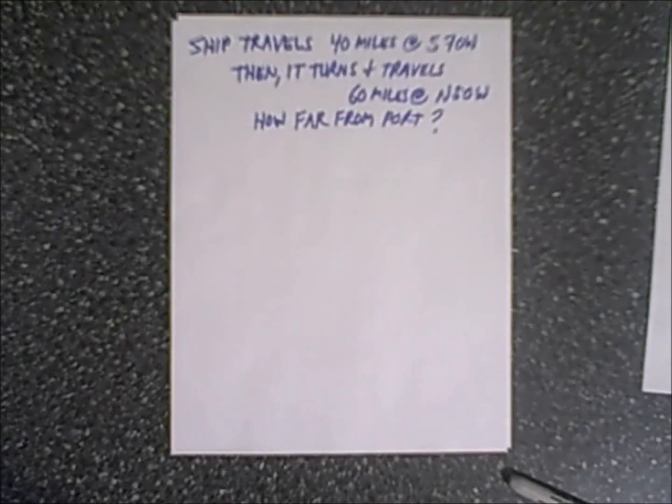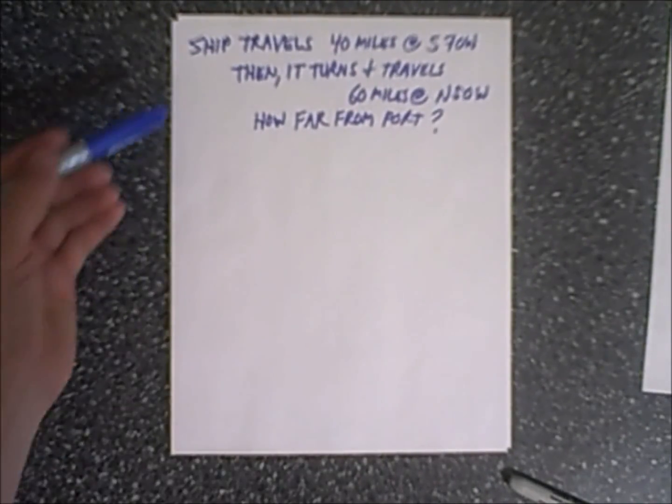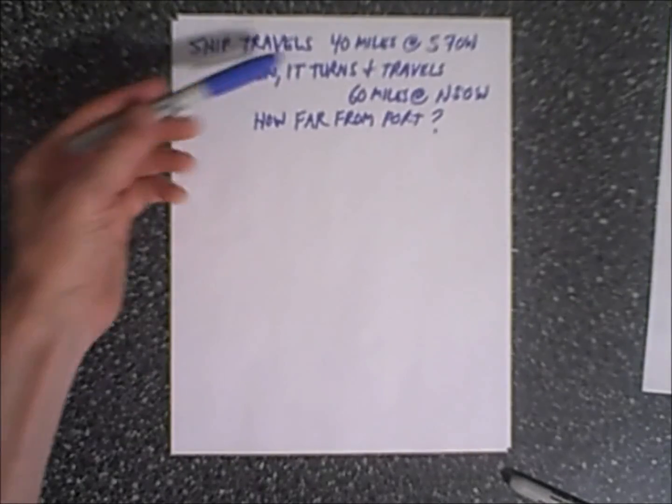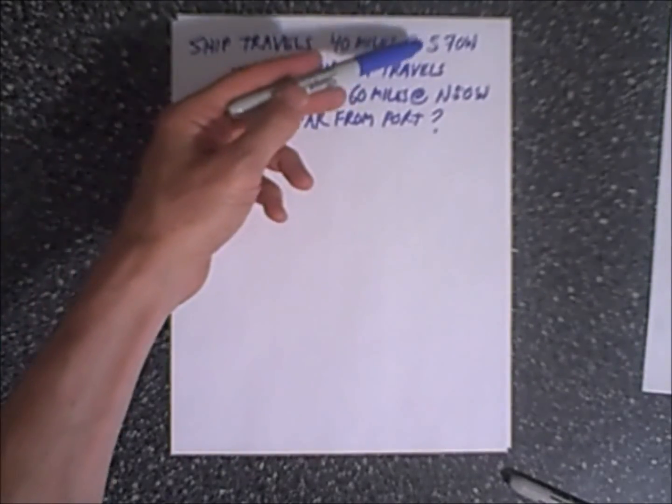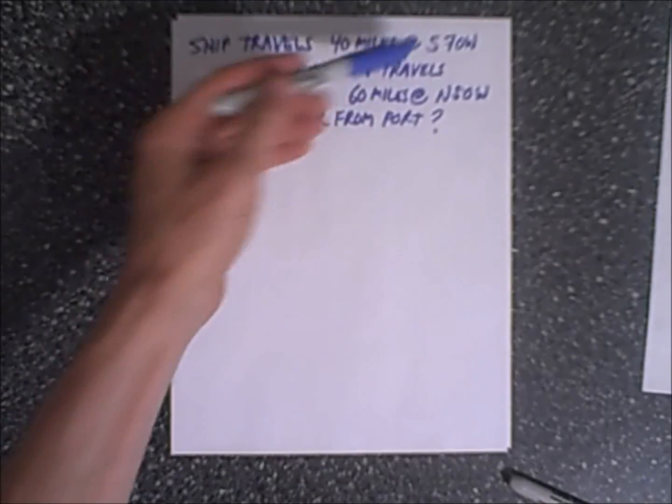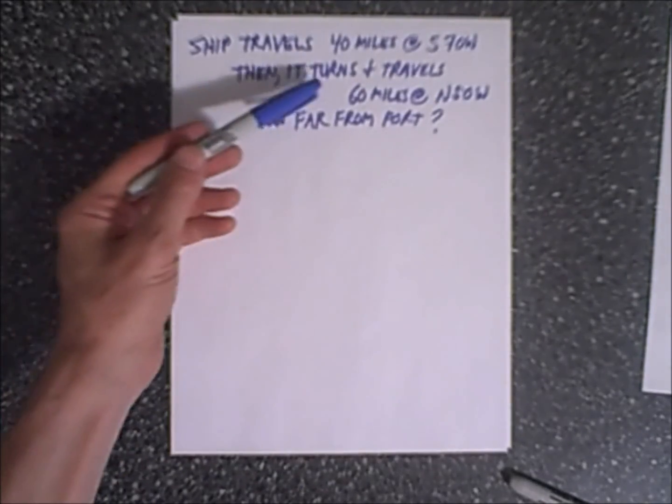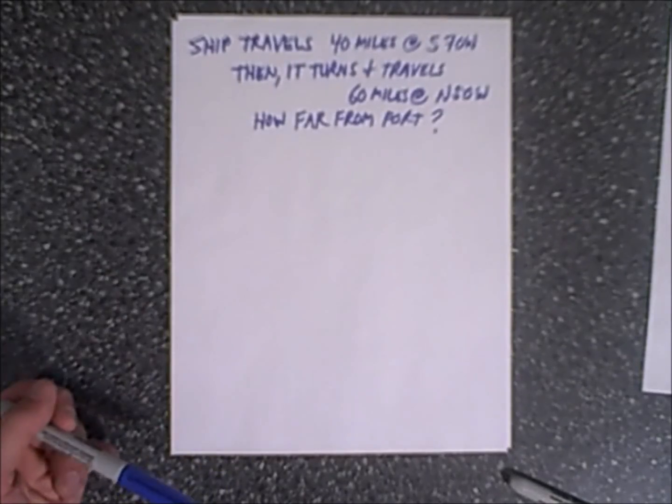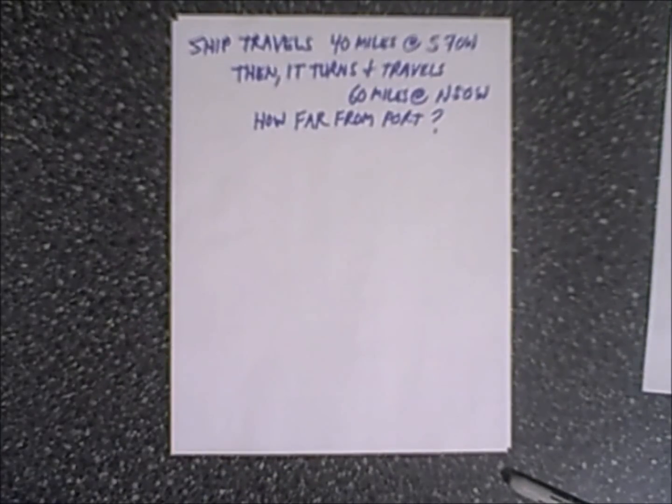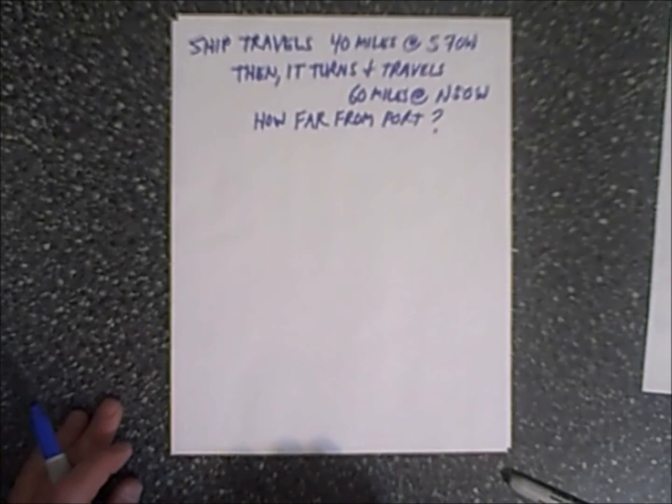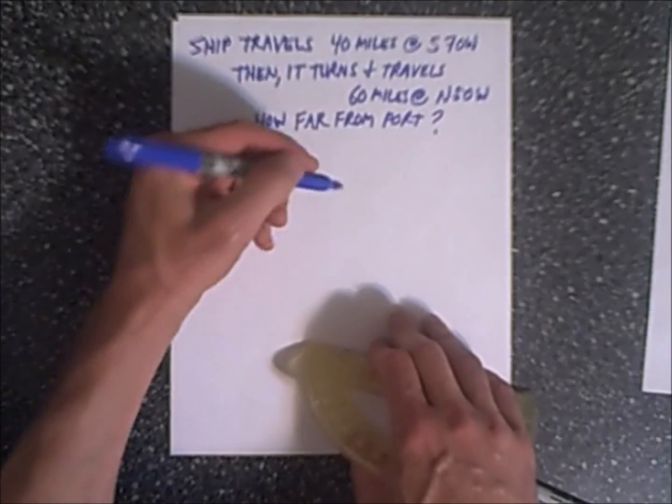Now in this example we have a little bit of variation. We have a ship that's traveling 40 miles at a bearing or compass setting of south 70 west, and then it turns and travels 60 miles at a compass direction of north 50 west. How far is it from the port? So again like the other example, let's draw a picture.